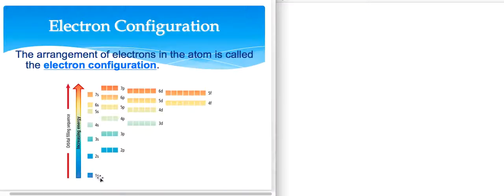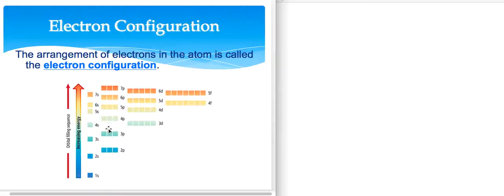First, you should know that the energy levels are not necessarily what you would expect. Yes, they do go in order — first is closest to the nucleus and then we go all the way out. On our periodic table we have seven energy levels, but at some point the energy levels start to stagger and mix up a little bit. So we have 1S, 2S, 2P, 3S, 3P, but 4S sneaks in before 3D.